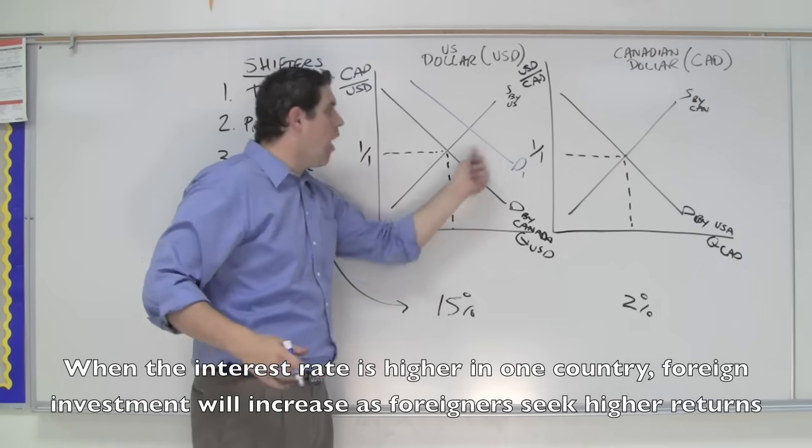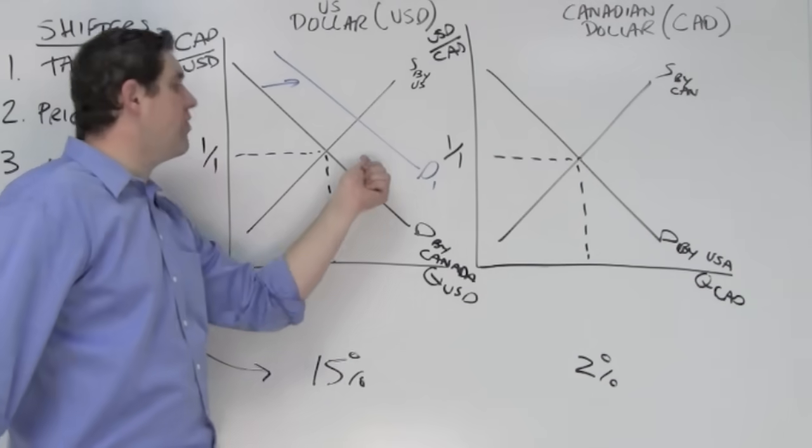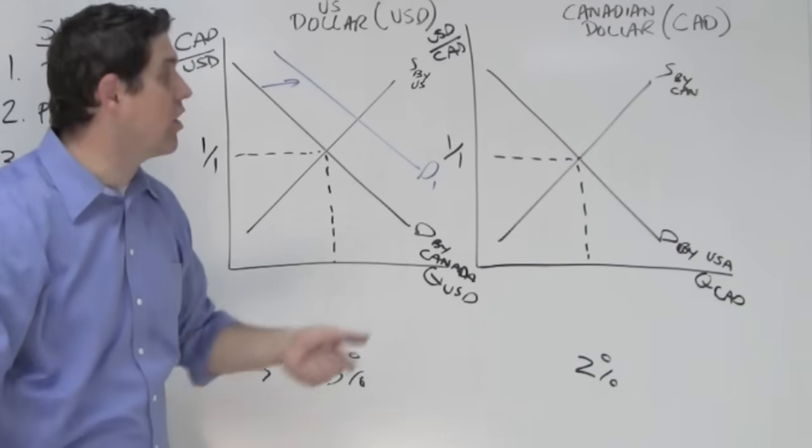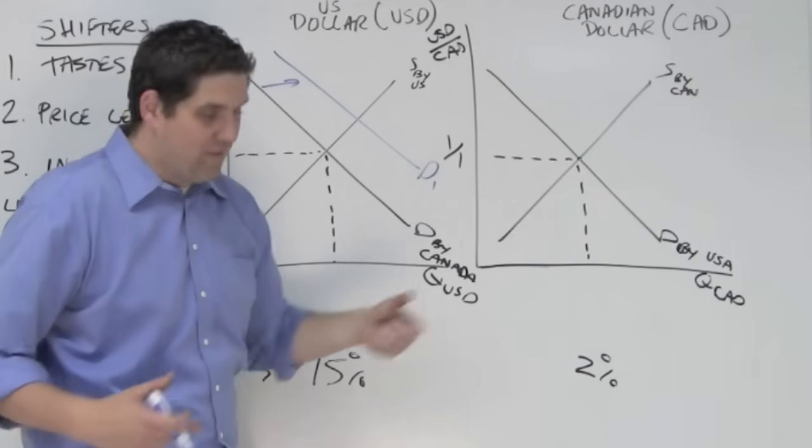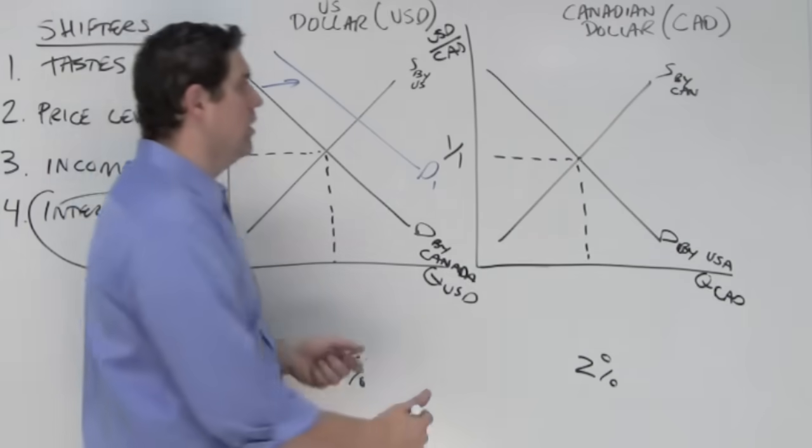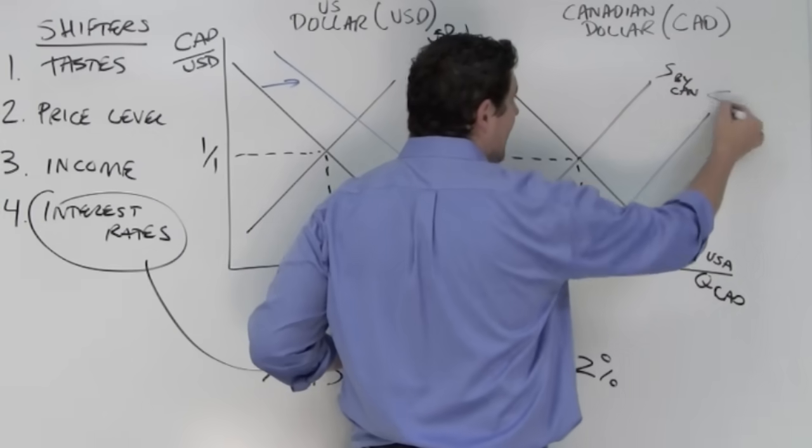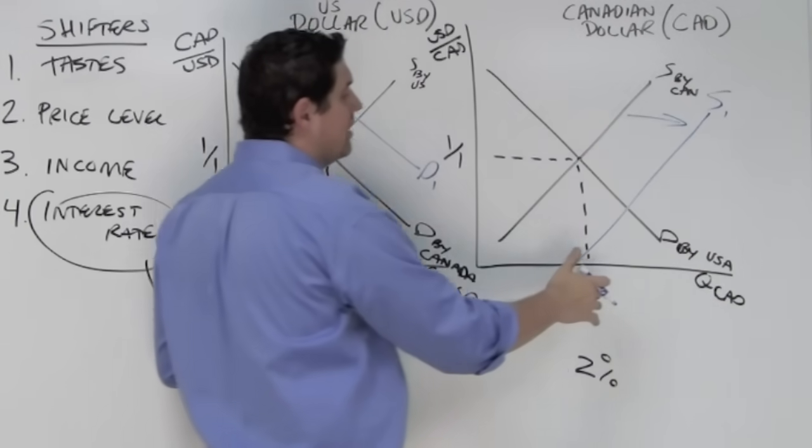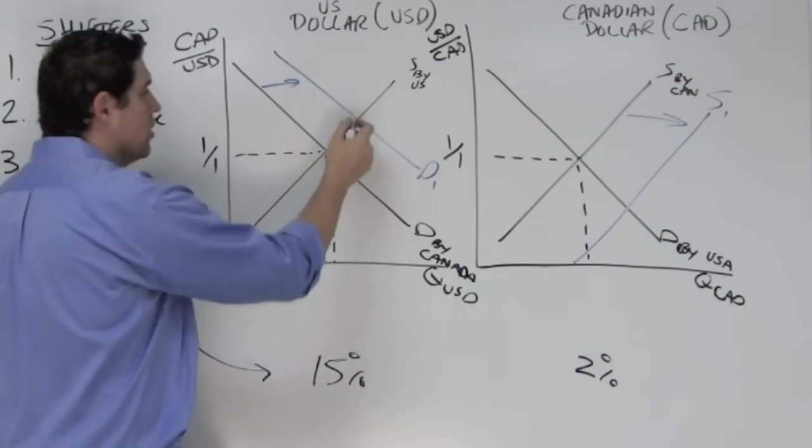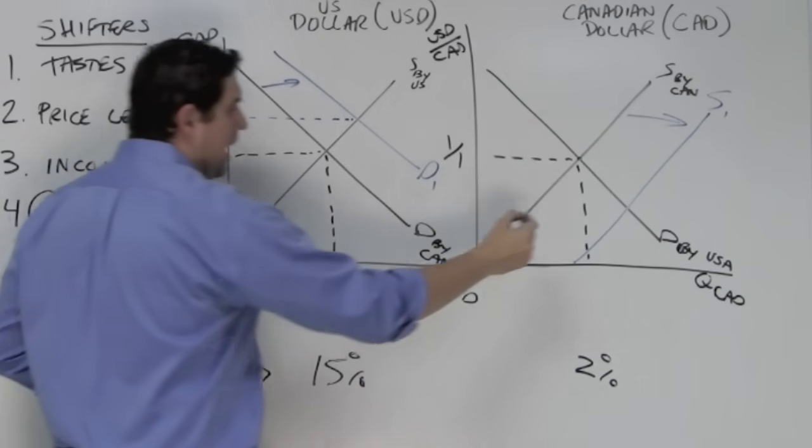The demand is going to increase for American dollars. Why? Well, because Canadians want more of them. If the Canadians want these, they've got to supply their Canadian dollars. They've got to go to the foreign exchange and supply those. And so when they supply them, that leads to an increase in supply of Canadian dollars. And that ends up being a new location. Here and here.